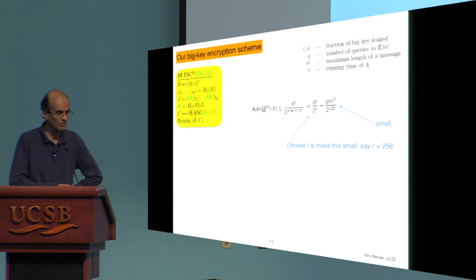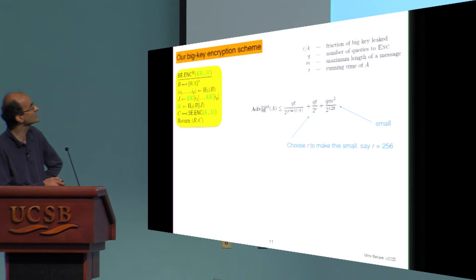So now we turn to analyzing this scheme and what our result is about is saying consider some adversary attacking it. We've defined our notion goal of security. It's this leakage indistinguishability and it has some advantage and we want an upper bound on it. And we give this upper bound as a function of the different resources of the adversary, the queries, time, messages, and of the fraction of bits leaked.